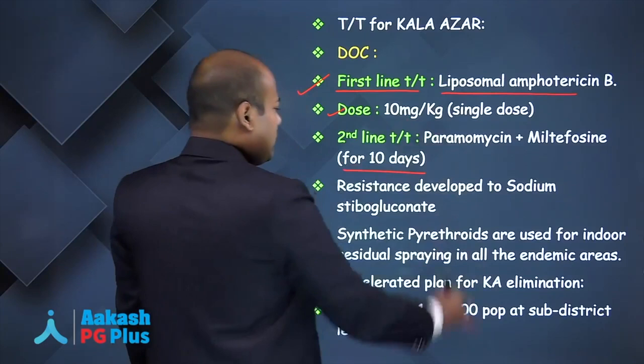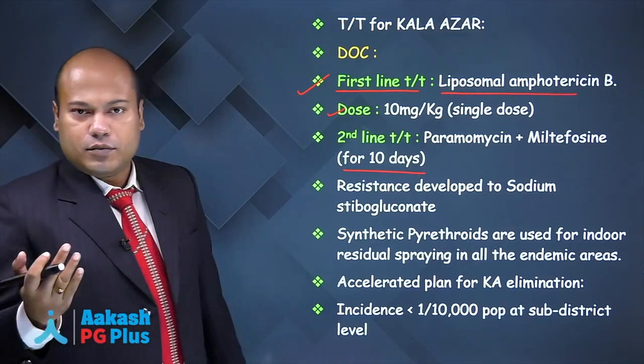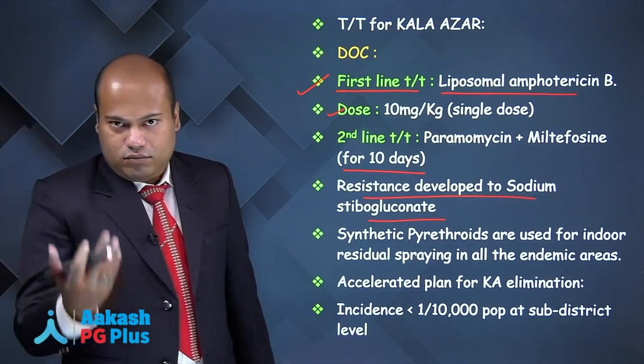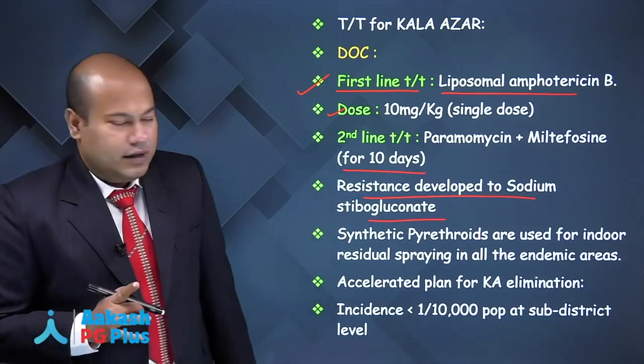Leishmania has developed resistance to the previous first line treatment, which was sodium stibogluconate. The insecticide of choice against sandfly is DDT, sprayed up to 6 feet on the wall. In case of DDT resistance, you use synthetic pyrethroids for indoor residual spraying in endemic areas.